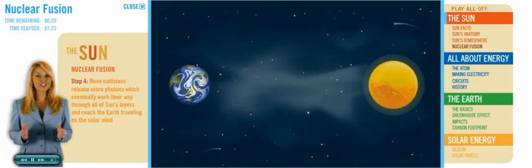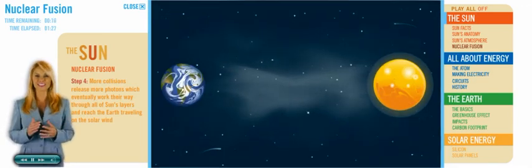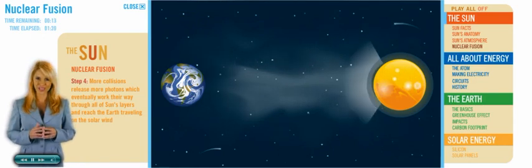Step four, more collisions release more photons, which eventually work their way through all the Sun's layers, and reach the Earth traveling on the solar wind.